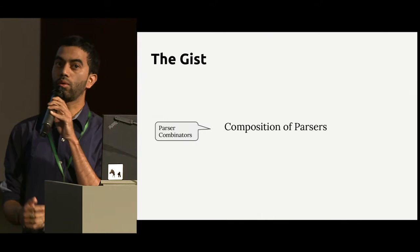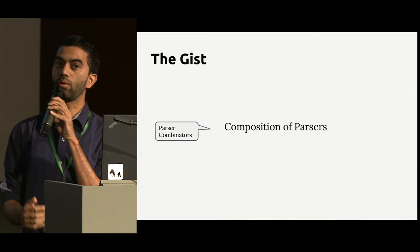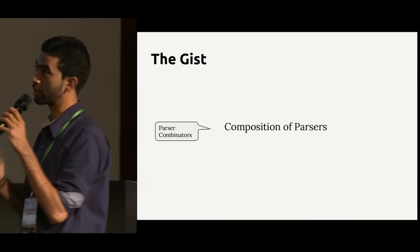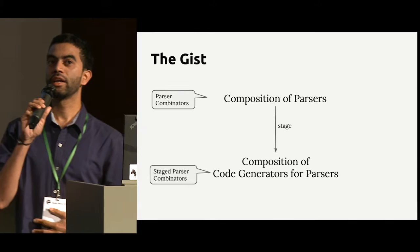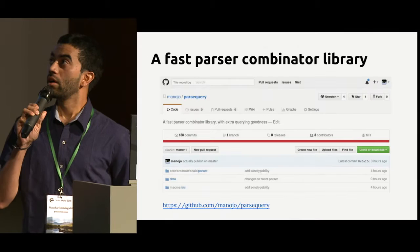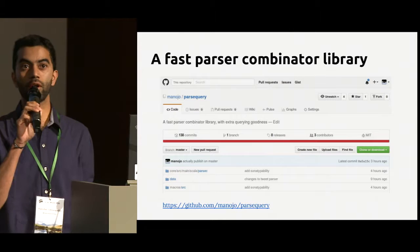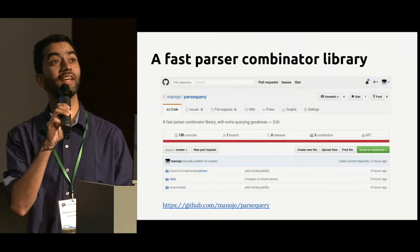The take-home message for this talk is that we're going to turn the composition of parsers — parser combinators are a composition of parsers — and we're going to systematically turn these into staged parser combinators, which are compositions of code generators for parsers. It's now available online as parse query, and you can take a look at it at the end of the talk.